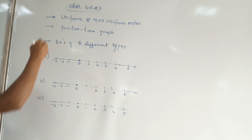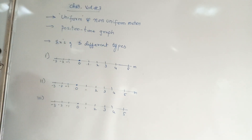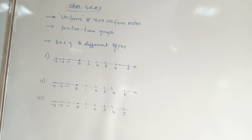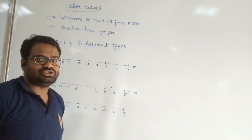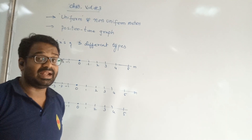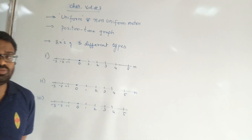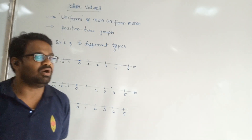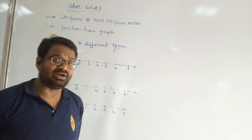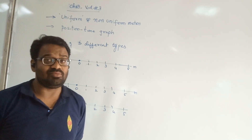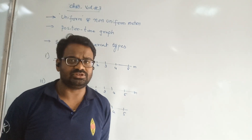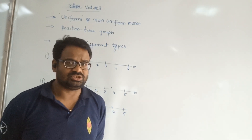First of all, what is uniform motion? What is motion? Motion is the change in position of a body — at different time intervals, the body is going to be at different positions. If for different time intervals the body is at the same location, what does that correspond to in physics? We call that the rest position.